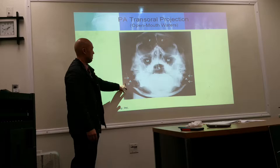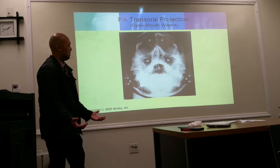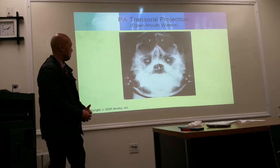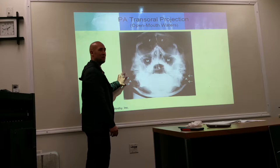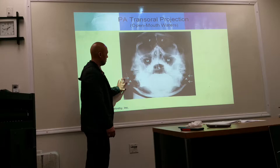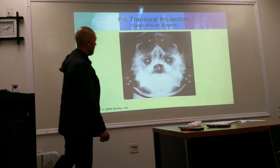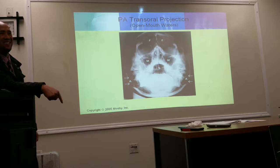The label 'A' on the Waters image points to the mastoids, labeled as air cells in the textbook — so we will call them air cells, but they are pointing to the mastoid air cells.